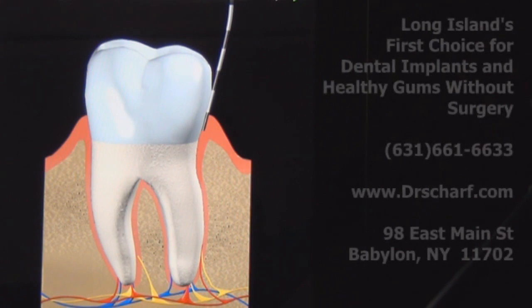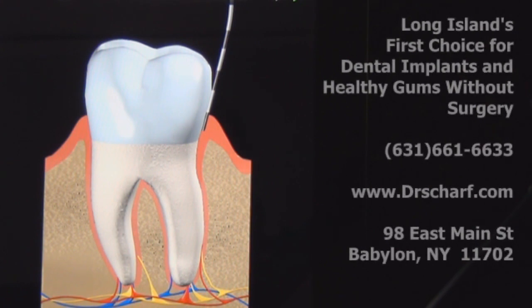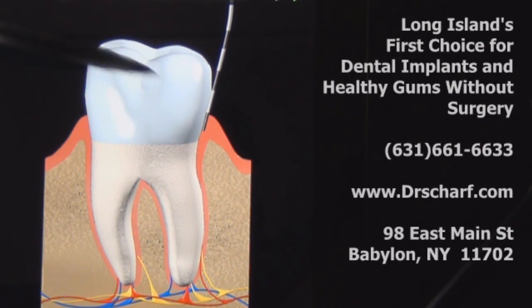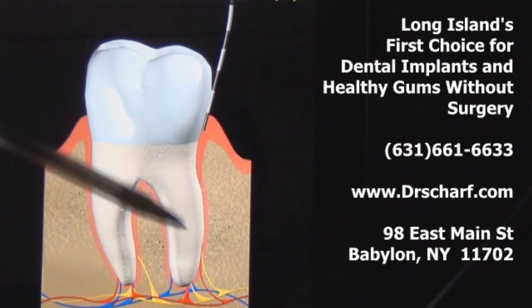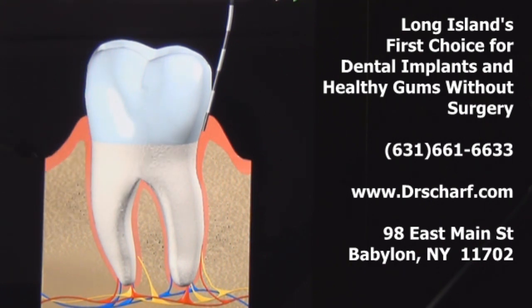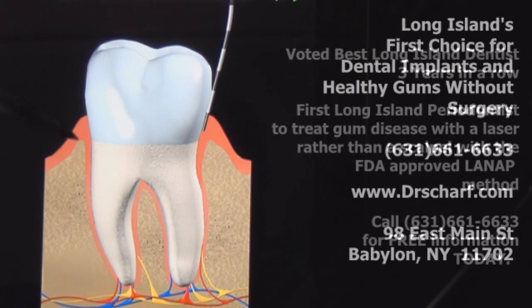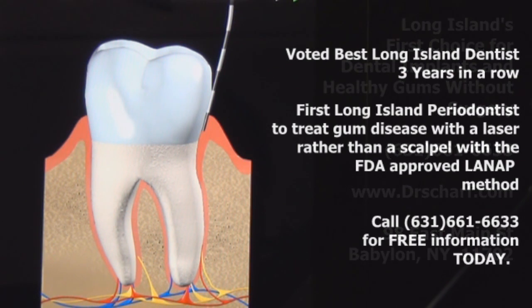Today we're going to talk about periodontal disease. In this diagram, this is the tooth — the part of the tooth you see, which is called the crown. This is the root of the tooth, this is the bone, and this is the gum. The gum covers the bone and seals against the tooth.